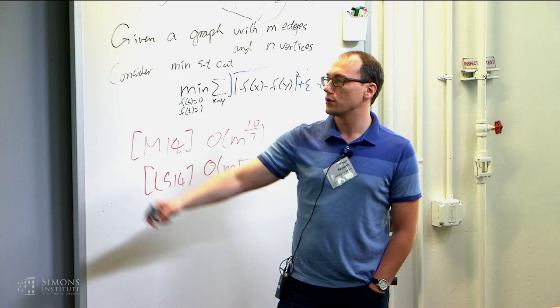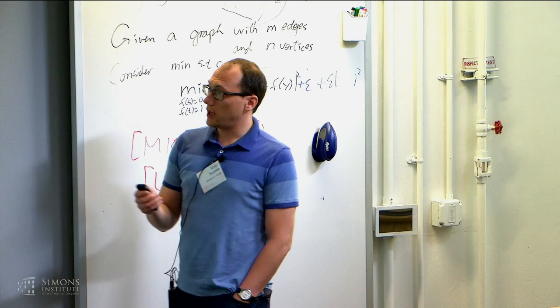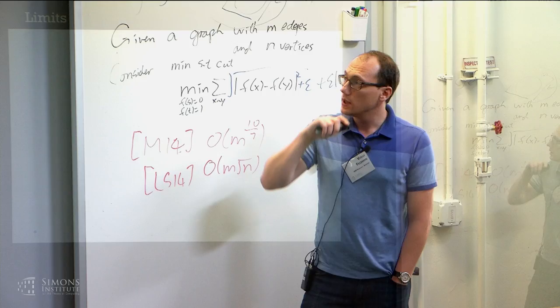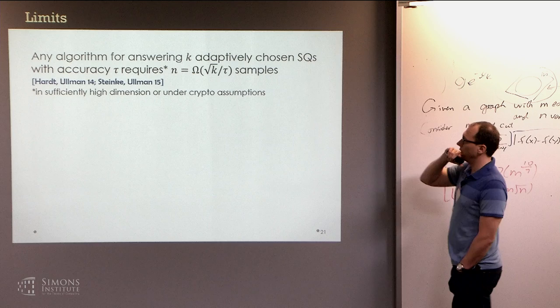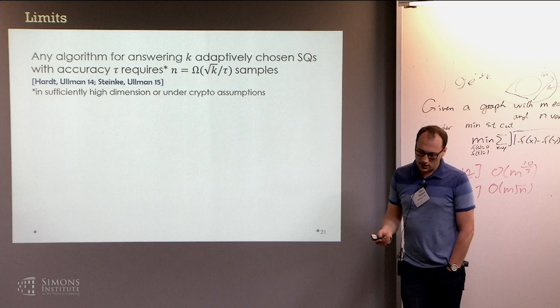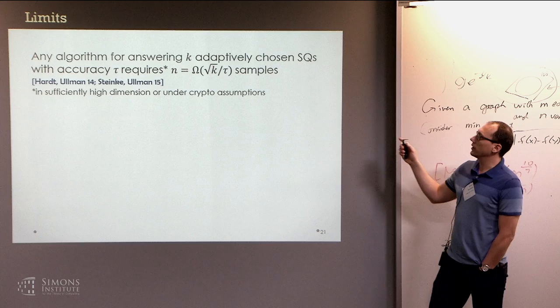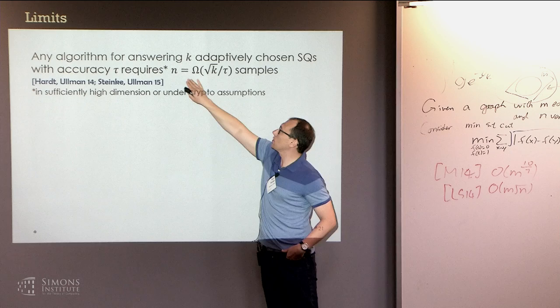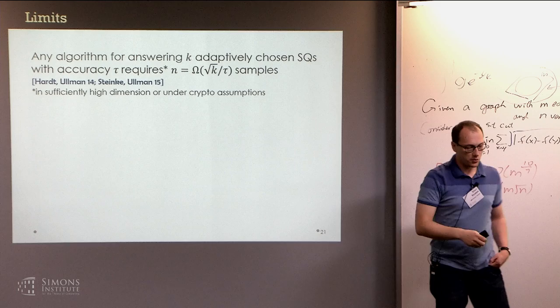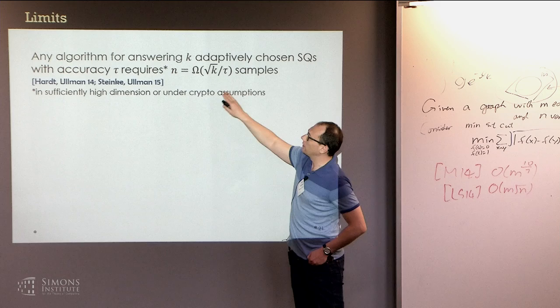Now let me describe some limitations. It has been shown by Hardt and Ullman, and then improved by Steinke and Ullman, that if you don't make any assumptions on the distribution or the algorithm, then any algorithm for answering K adaptively chosen statistical queries with accuracy tau will require a number of samples scaling as the square root of K. In some sense, our algorithm is the best one can achieve without additional assumptions, although one can do slightly better in low dimensions inefficiently.